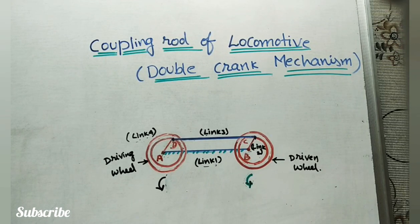Let us discuss one of the inversions of four bar chain mechanism. It is called coupling rod of locomotive or double crank mechanism. Double crank mechanism means it has two cranks in this mechanism - crank KD and crank BC.